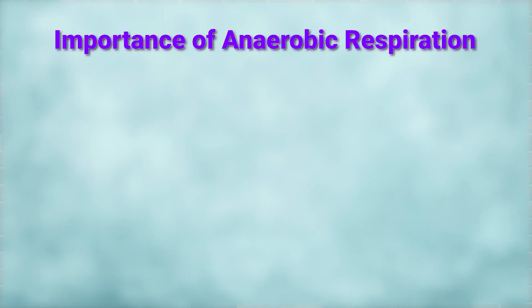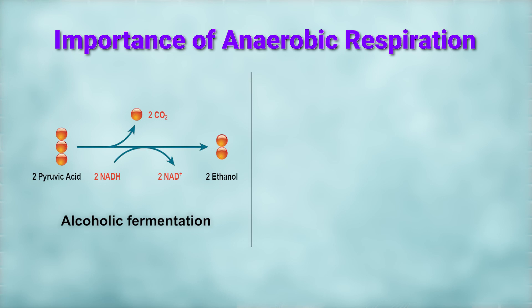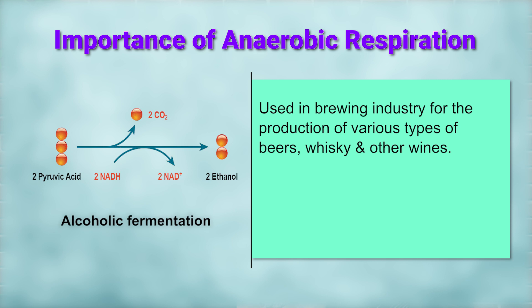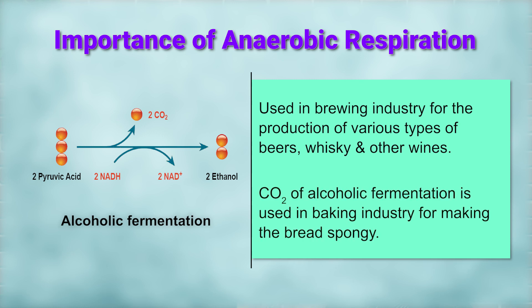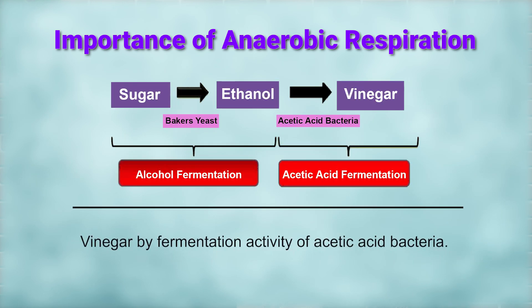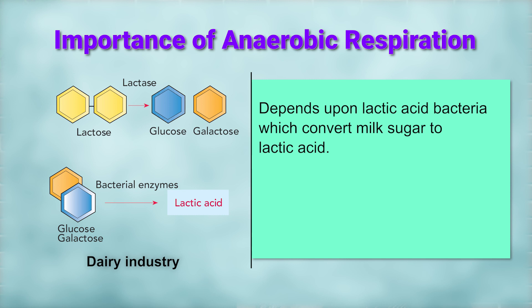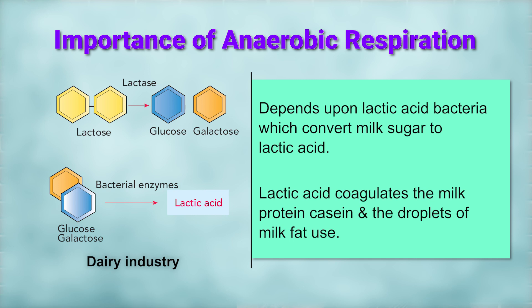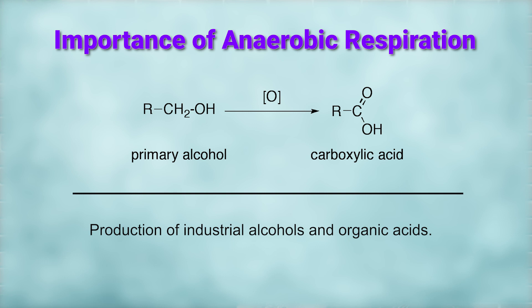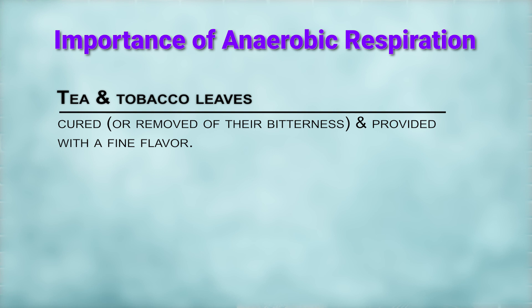Importance of anaerobic respiration: alcoholic fermentation is used in the brewing industry for the production of various types of beers, whiskey, and other wines. Carbon dioxide from alcoholic fermentation is used in the baking industry for making bread spongy. Vinegar is produced by the fermentation activity of acetic acid bacteria. The dairy industry depends upon lactic acid bacteria which convert milk sugar to lactic acid, coagulating the milk protein casein. Production of industrial alcohols and organic acids, and curing of tea and tobacco leaves to provide fine flavor.